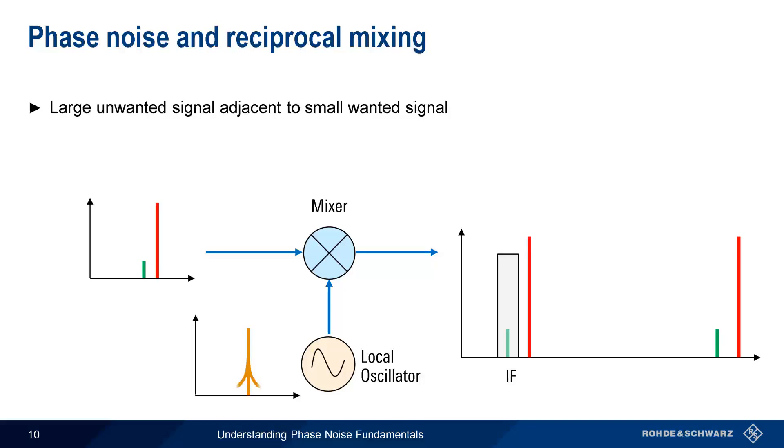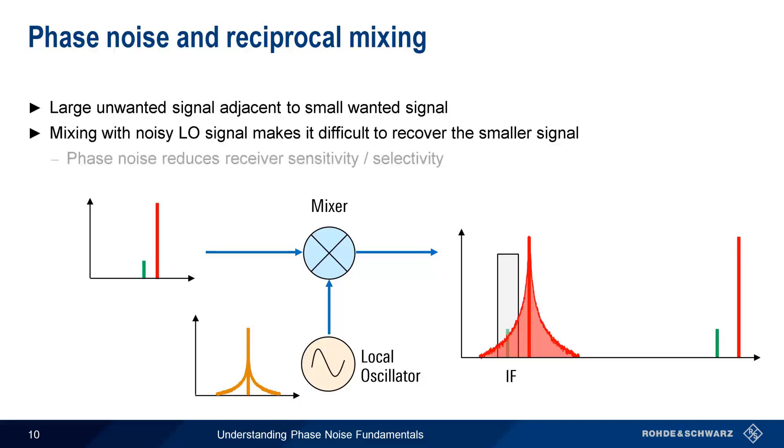However, if our local oscillator has excessive amounts of phase noise, this will spread the energy from the adjacent unwanted signal into the IF filter, making it difficult or impossible to recover the smaller signal. Local oscillator phase noise, therefore, should be kept as low as possible, since this phase noise reduces both the sensitivity and selectivity of a receiver.